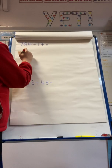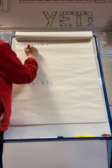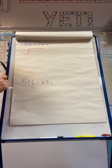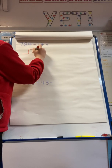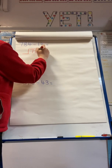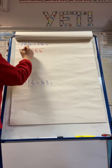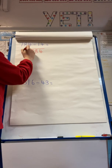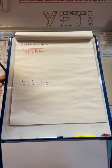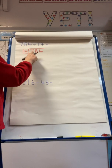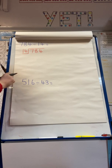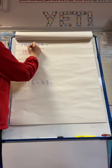The first thing I need to do is set out my calculation. It's set out just like the bus stop method. So I have 784 in total and I'm dividing by 14.